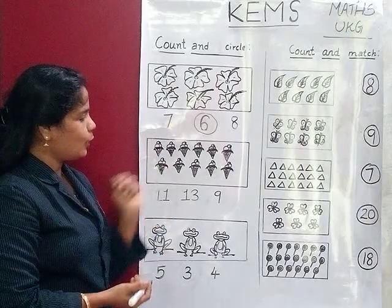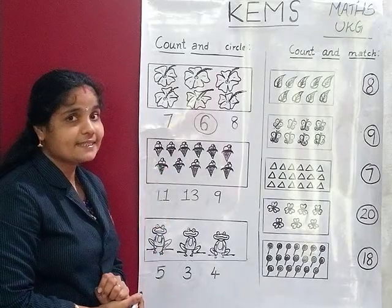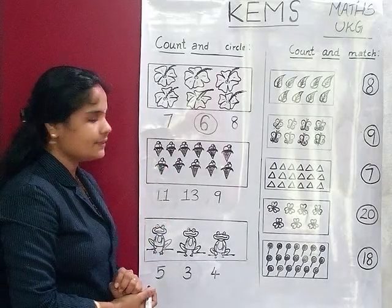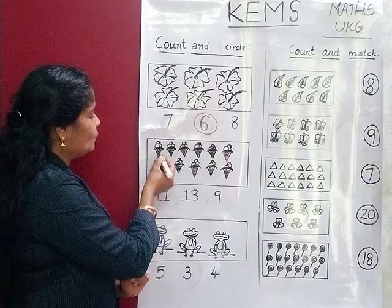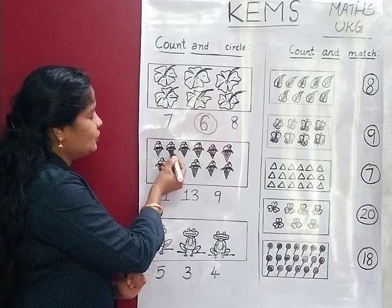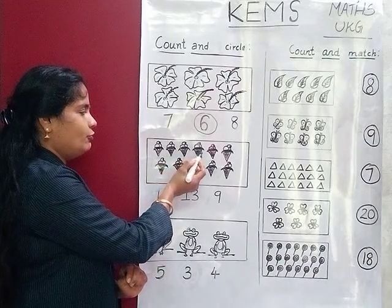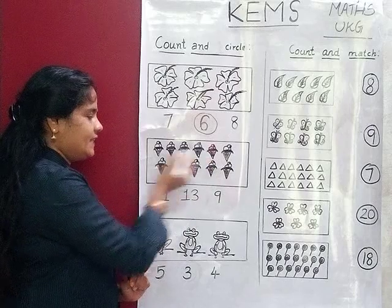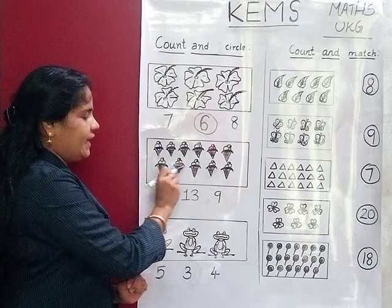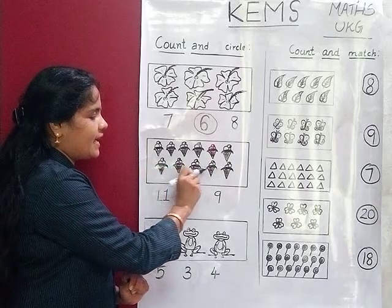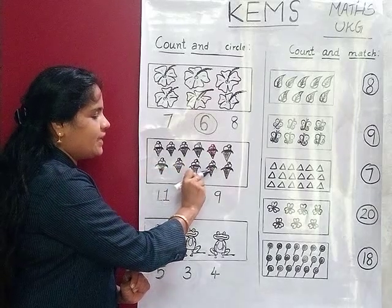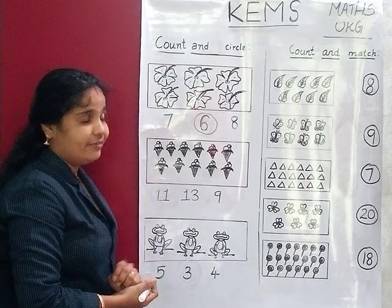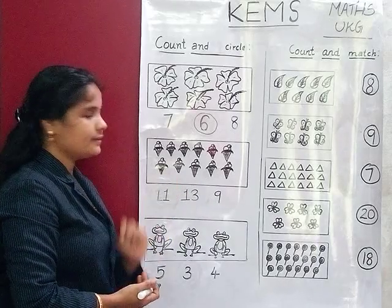Then how many ice creams are there? Let's count: 1, 2, 3, 4, 5, 6, 7, 8, 9, 10 and 11. There are 11 ice creams.